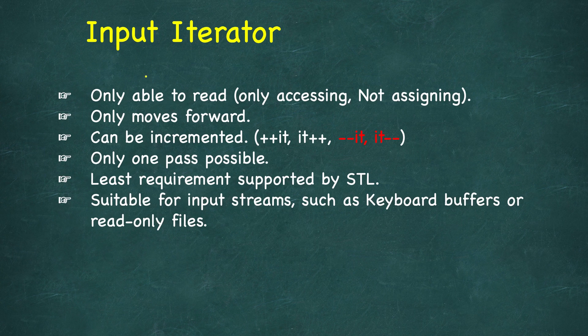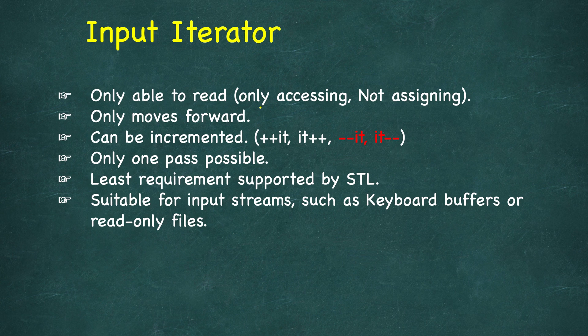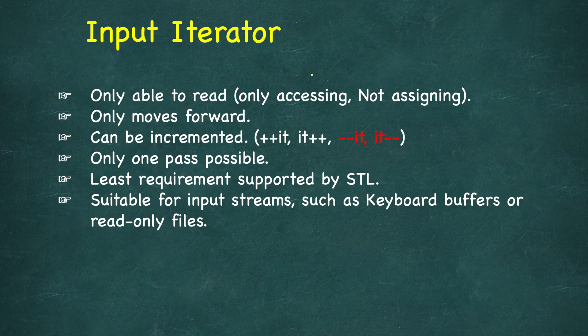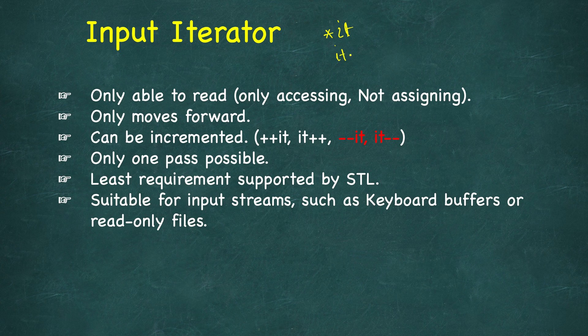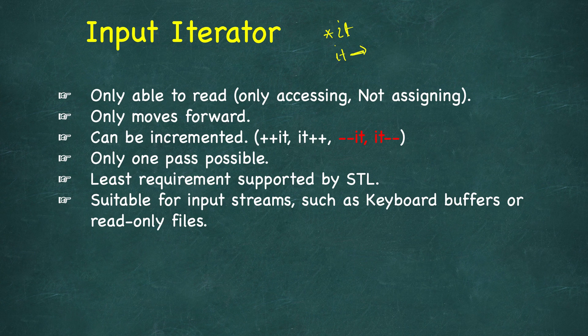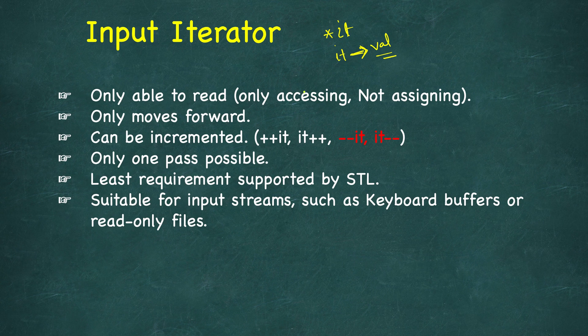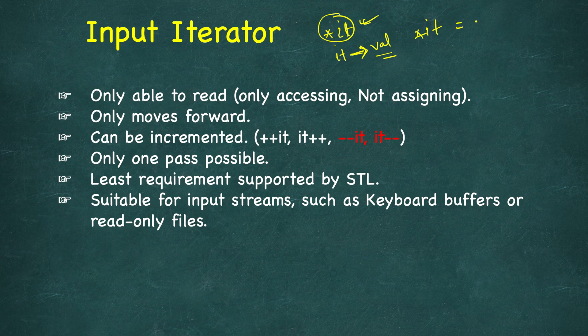The first type is input iterator. As the name says, these are only able to read - only accessing, not assigning. If you have done programming with iterators, you notice you can dereference them. Either you write star it to dereference, or if the iterator is pointing to an object of some class, you can access member values using the arrow operator. These are two different ways of dereferencing or accessing the value. Here we can only access it. Reading is fine, but when we try to write star it equals some new value, this will not be allowed on input iterator.